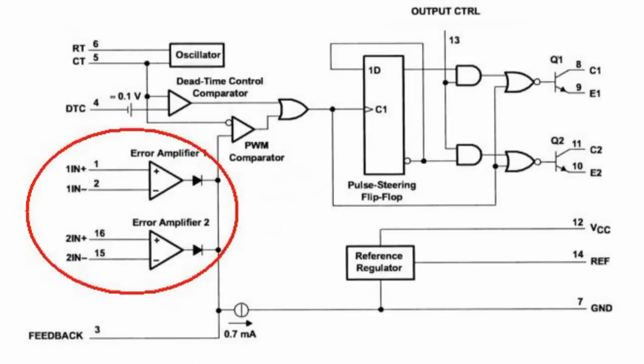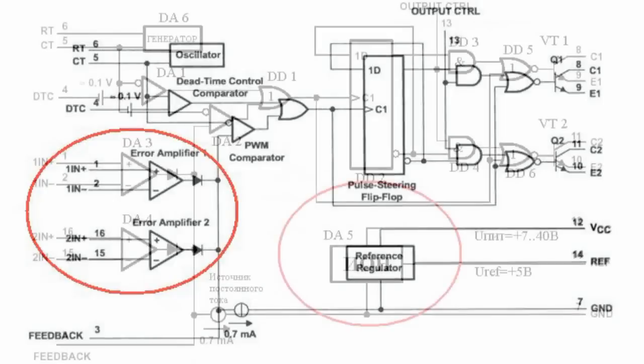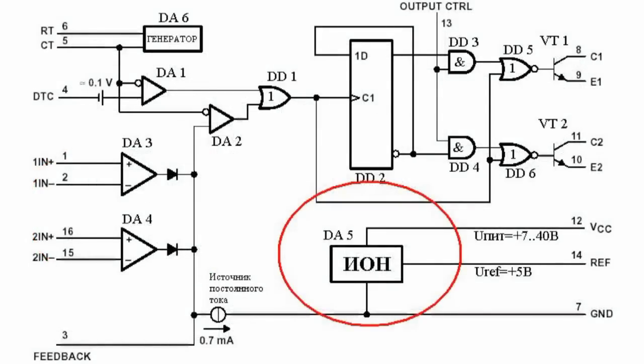PWM controller regulator performance depends on the amplitude frequency characteristic of its error amplifier. The error amplifier outputs have a high active voltage level. They have a common OR function at the PWM comparer input.